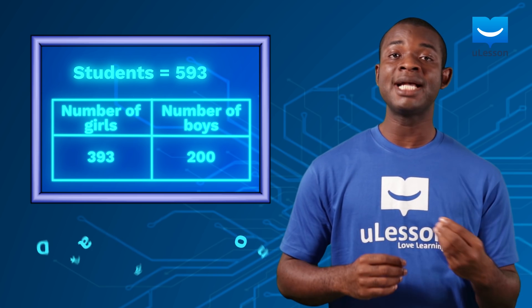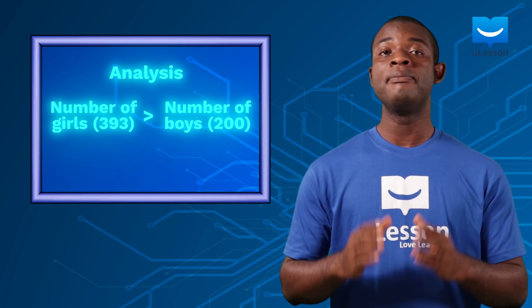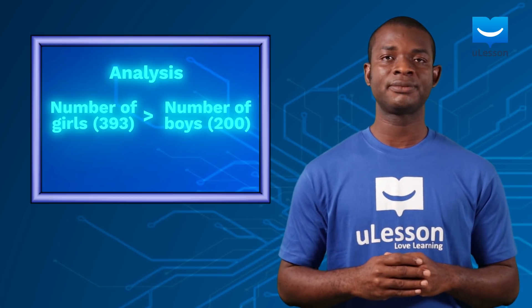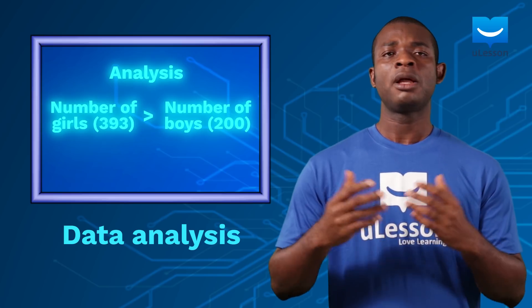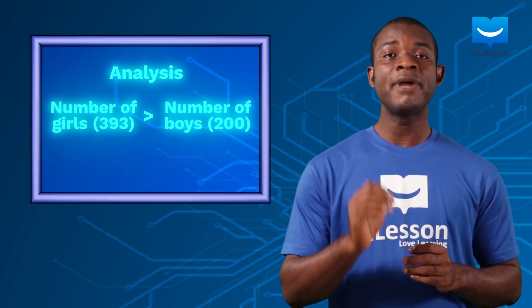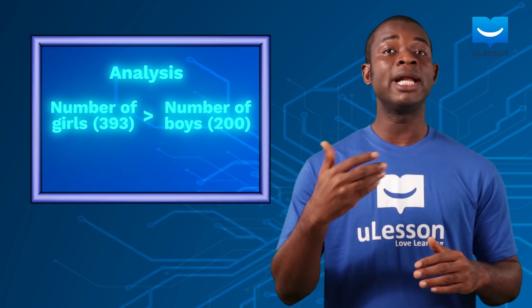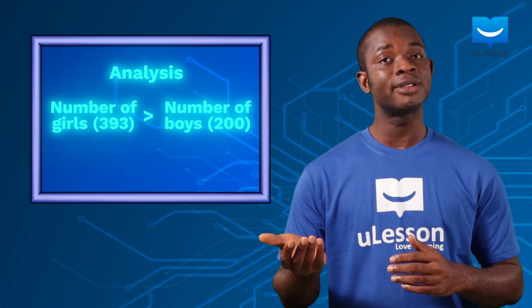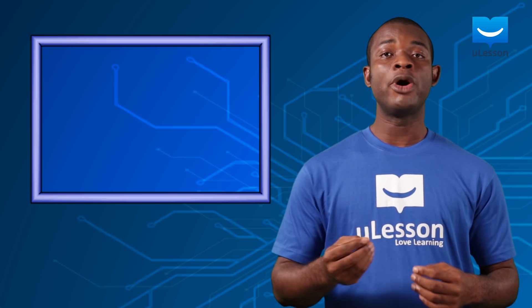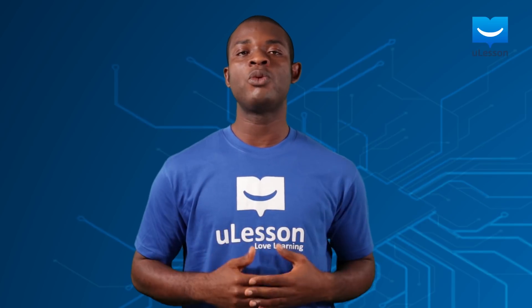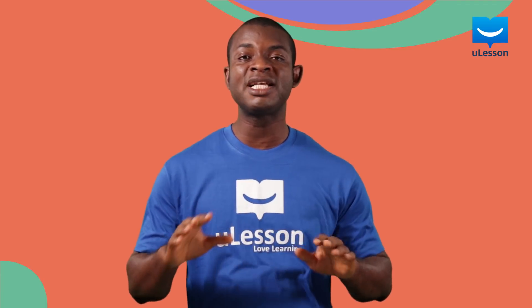We can further see from the organized data that the number of girls may surpass that of boys. This is the process of analyzing data. From the analysis, we may say that there are more girls in that area who are interested in school than boys — no offense to the boys — or we can say that there are more girls than boys in the area, or anything related to the initial question we wanted to answer. So in statistics, we work with data to get more harmonized information about different situations in life.